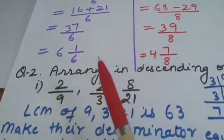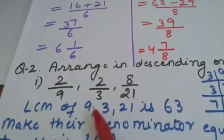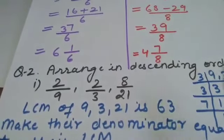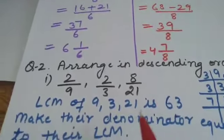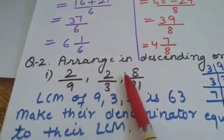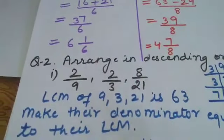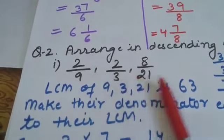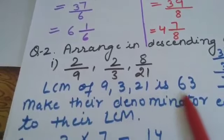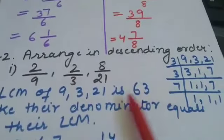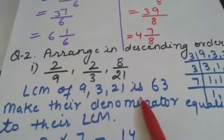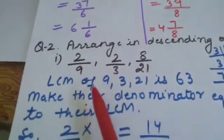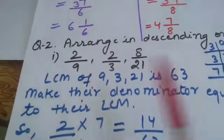Now question number 2 of exercise 2.1. Some fractions are given — 2 by 9, 2 by 3, and others — and you have to arrange them in descending order. These types of questions you might have learned in class 6. The same procedure: first take the LCM of the denominators. The LCM of the denominators here is 63.